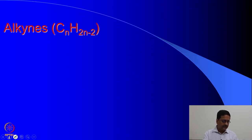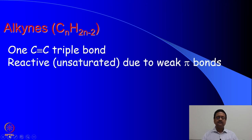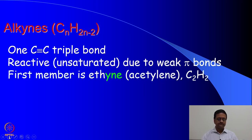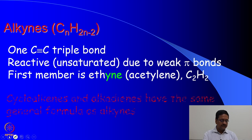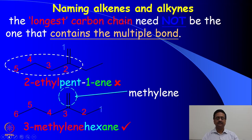Alkynes are compounds which contain a C-C triple bond and are reactive in nature due to weak pi bonds. The first member of this series is ethyne or acetylene, identified as C2H2. You can understand that there may be a large number of different compounds which can have a C-C triple bond. Cycloalkenes and alkadienes have the same general formula as alkynes, so we will continue understanding the names of alkynes and alkadienes.